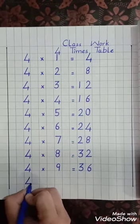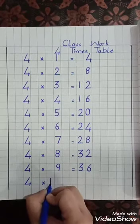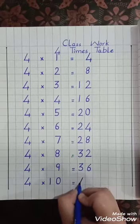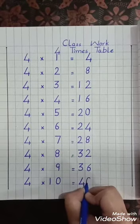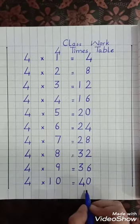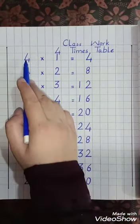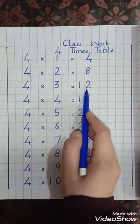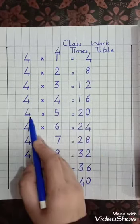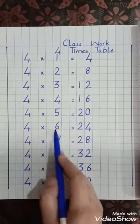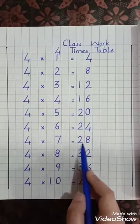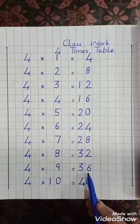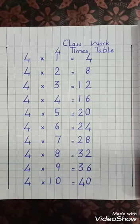Four, multiply, ten, equal lines — 40. Four tens are 40. Four tens are 40. Four ones are 4, four twos are 8, four threes are 12, four fours are 16, four fives are 20, four sixes are 24, four sevens are 28, four eights are 32, four nines are 36, four tens are 40. Thank you.